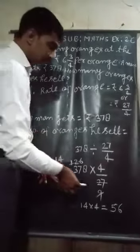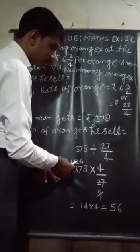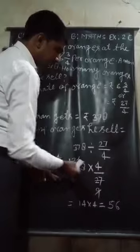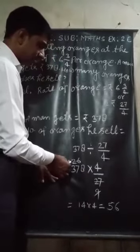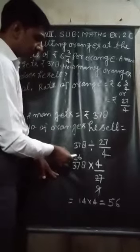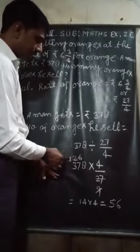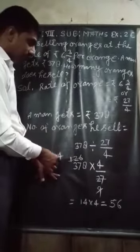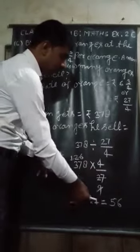After that, by 9, 126 will be divided. 9, 1, 9, and 3 times 12, 36, 9, 4, 36. Then, 14 multiply by 4. Here, 14 multiply by 4.